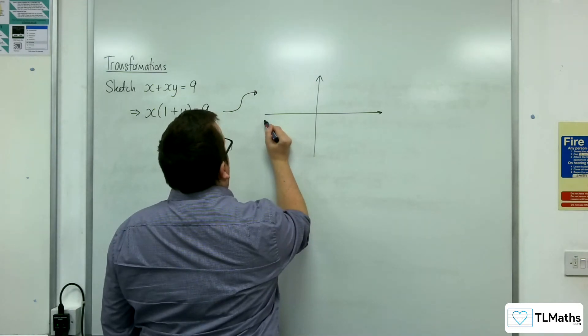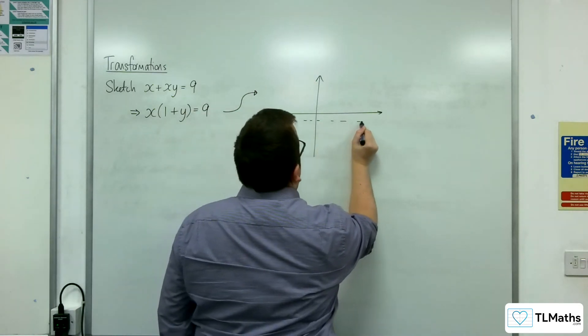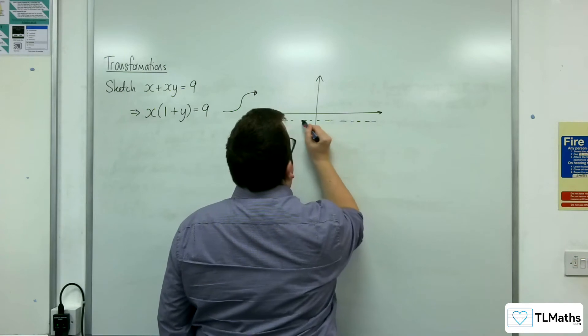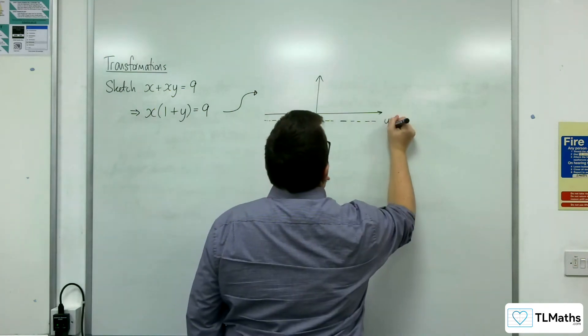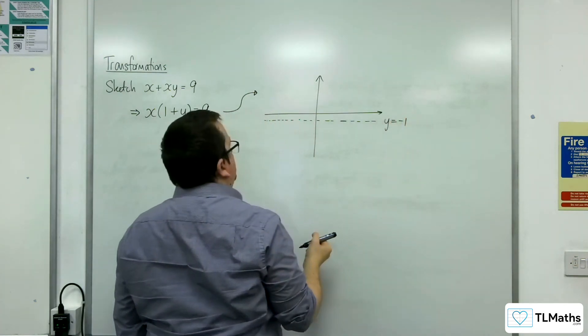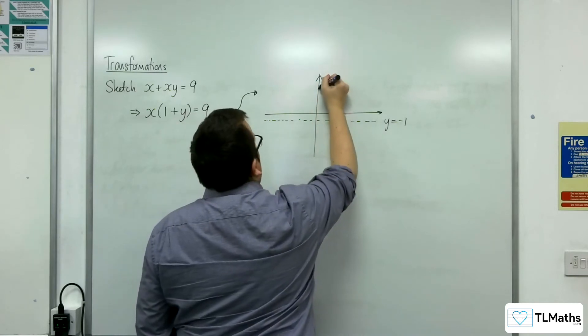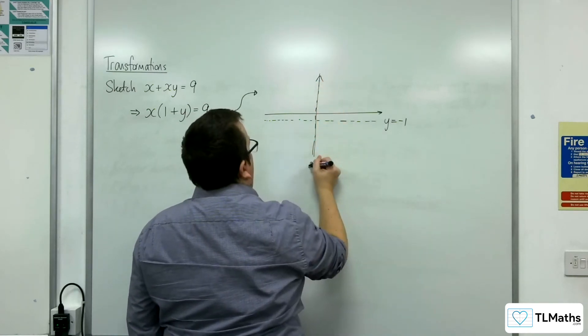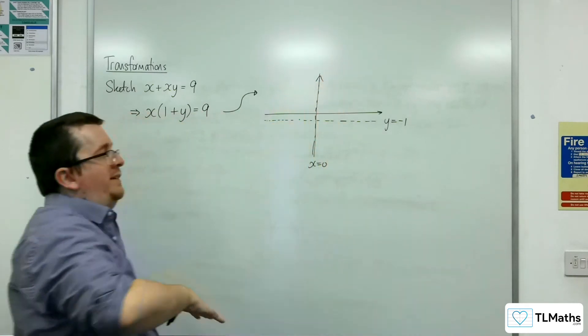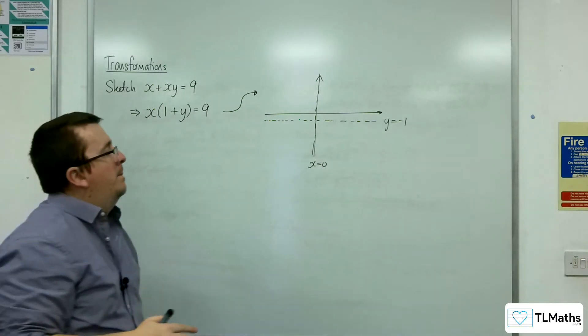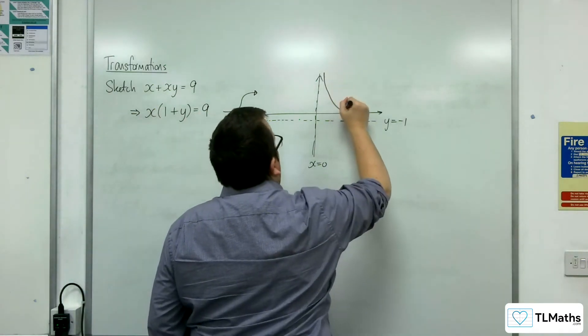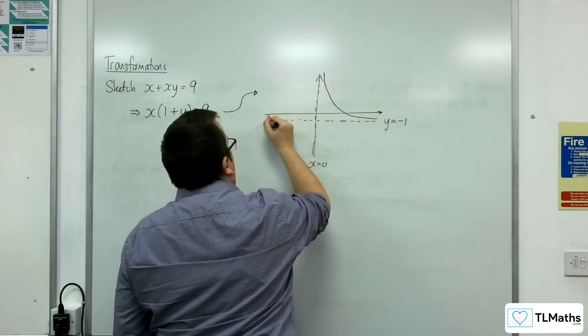So actually, you will have a horizontal asymptote at y equals minus 1. The vertical asymptote will still be at x equals 0 because we're only translating the curve downwards by one unit. So then the curve must look like this.